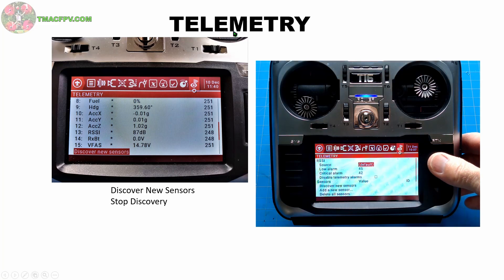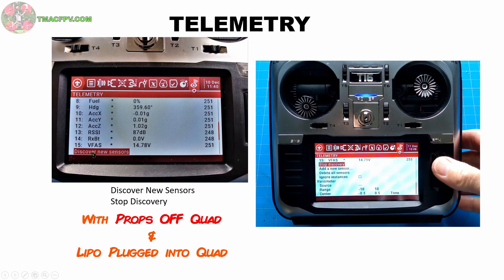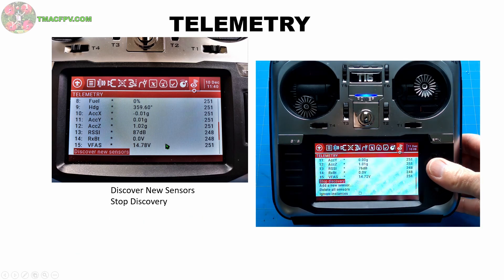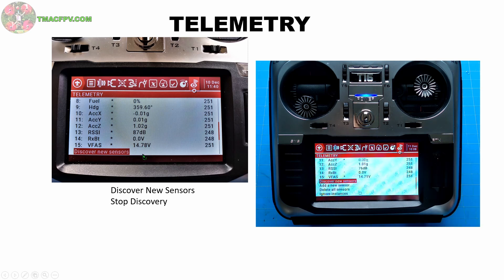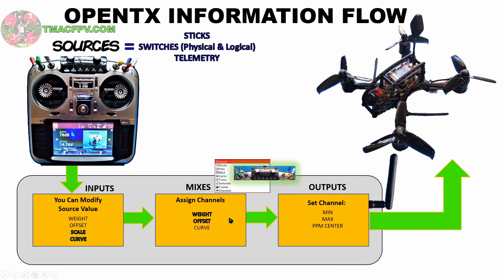Next we'll go to our Telemetry menu. After we've bound our receiver to our quadcopter, there's really only two steps we need to take here: scroll down to discover new sensors and press enter. Once the sensor data has been populated, if you're using a full telemetry receiver, just click on stop discovery. Two OpenTX menus down and only three to go. The last three menus — Inputs, Mixes, and Outputs — form the basis of our OpenTX information flow.